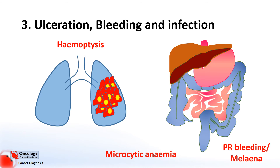One thing worth mentioning at this point is microcytic anemia. If you have chronic blood loss over a long period of time, as you might with this kind of bleeding, the body tries to compensate by making more and more blood cells but it often ends up pushing these blood cells out before they're mature. So if you look at the blood, you have low levels of haemoglobin — which is anemia — but also the blood cells tend to be quite small. In young pre-menopausal women microcytic anemia is quite common because of bleeding around periods, but in post-menopausal women and in men, microcytic anemia can be quite a worrying sign because it might mean there's a bleed somewhere in the body that just hasn't been detected yet.